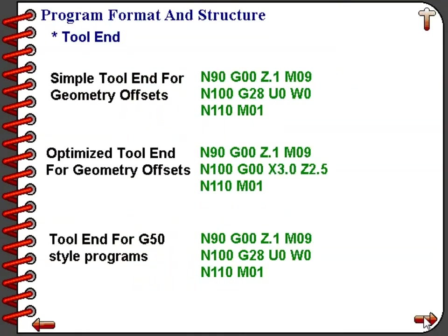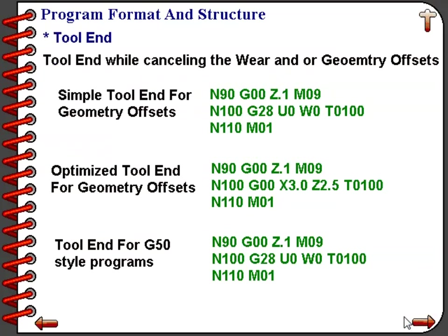Tool ending information varies greatly from machine to machine and company to company. For a simple tool end with geometry offsets, we simply rapid the tool in front of the workpiece, turn off the coolant, send the tool home using G28 U0 W0, and provide the optional stop command M01. The tool ending units below are basically identical but include the tool offset canceling codes — calling up the tool with offset 0, such as T0100, cancels both the wear and geometry offsets.